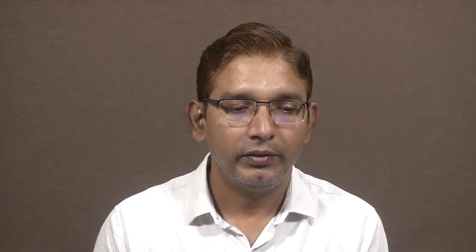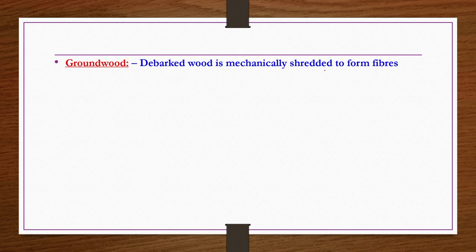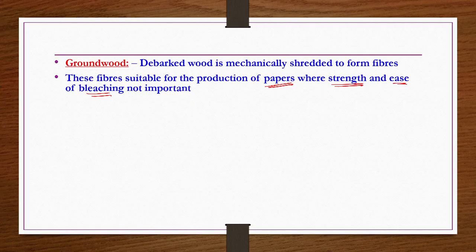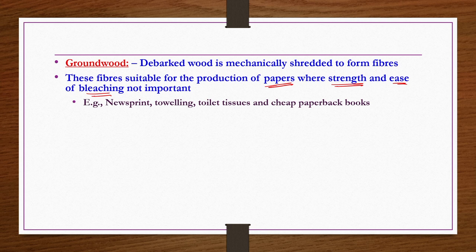In the ground wood method, debarked wood is mechanically shredded to form fibers. These fibers are suitable for production of papers where strength is not critical and ease of bleaching is not a concern — for example, brown paper. Examples of products made by ground wood method include newsprint, toweling, toilet tissues, and cheap paperback books.